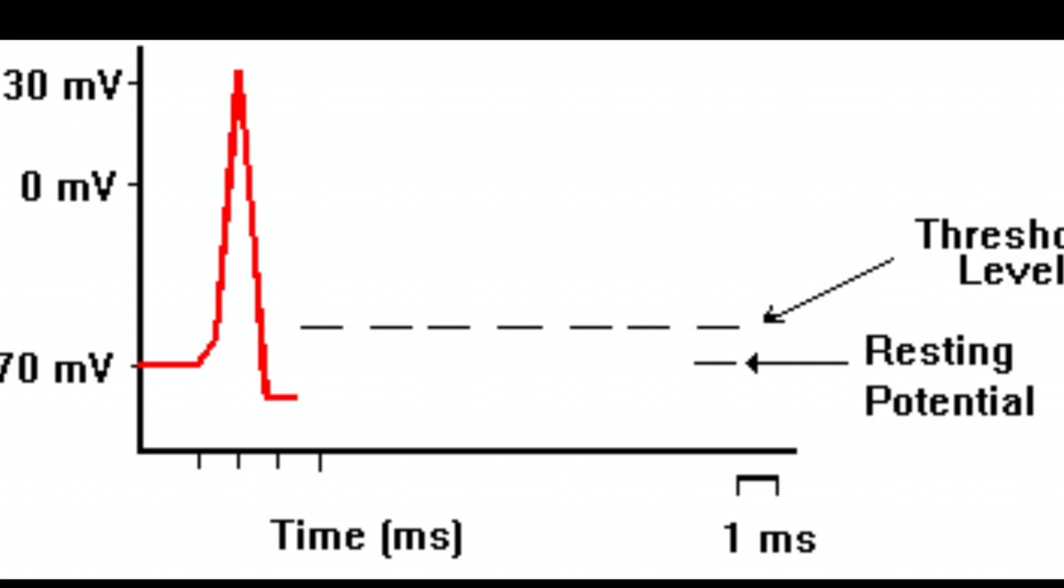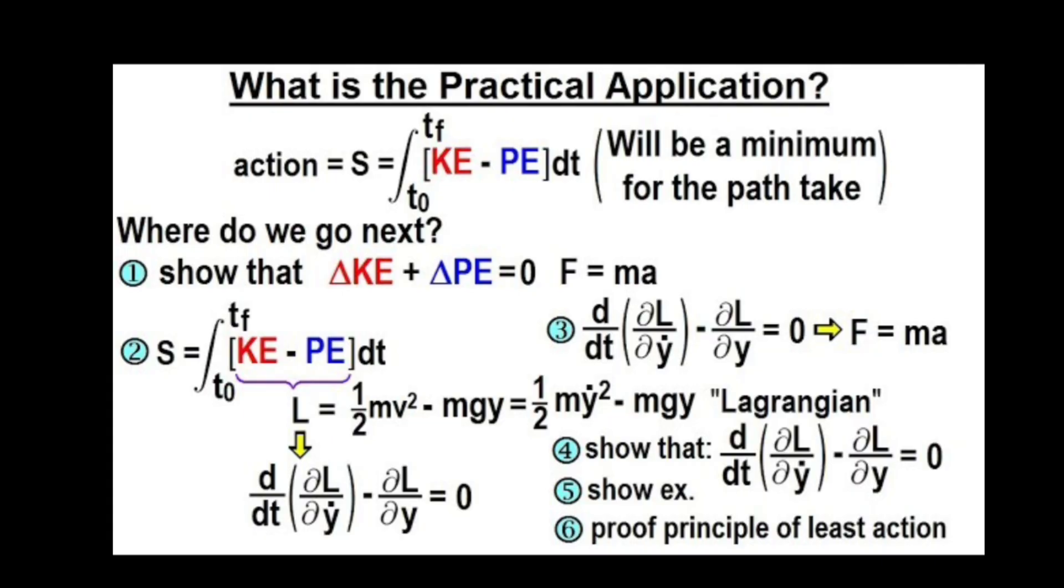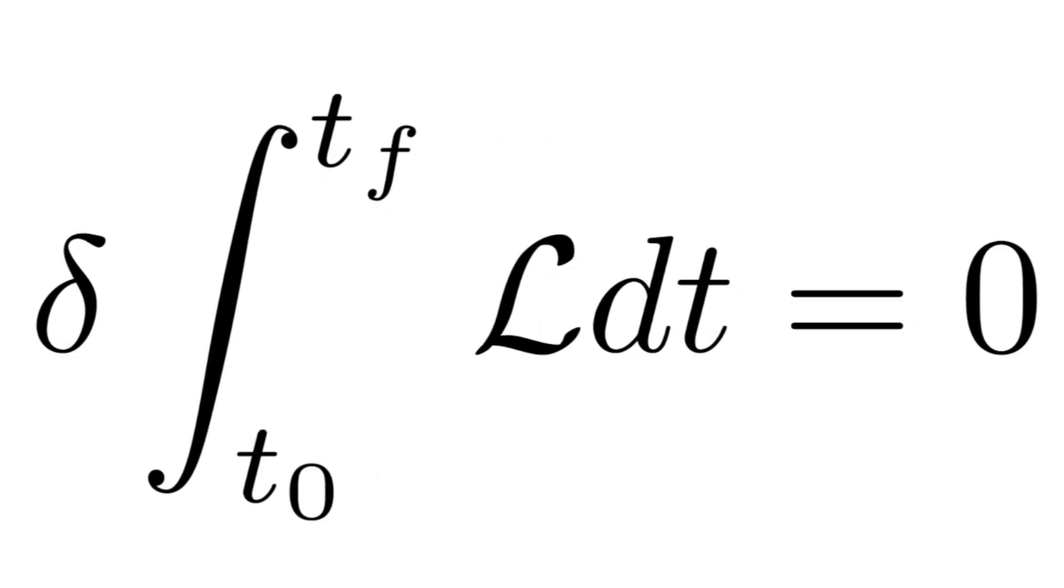What is Action? Action, denoted by the letter S, is a mathematical quantity that depends on the system's motion. For classical mechanics, it is defined as S equals integral from T1 to T2, L DT.